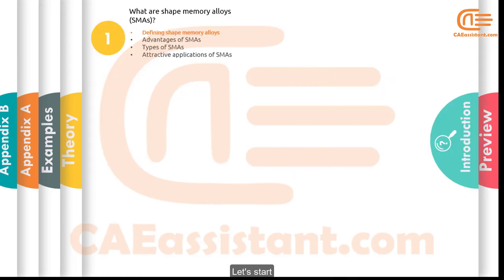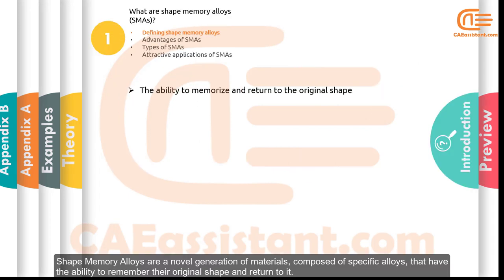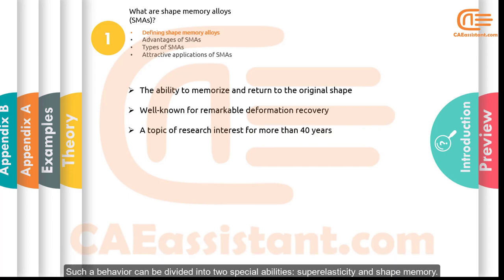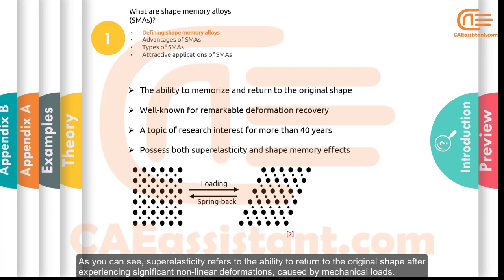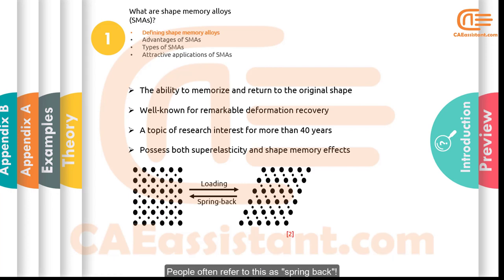Shape memory alloys are a novel generation of materials composed of specific alloys that have the ability to remember their original shape and return to it. This behavior can be divided into two special abilities: superelasticity and shape memory. Superelasticity refers to the ability to return to the original shape after experiencing significant nonlinear deformations caused by mechanical loads — people often refer to this as spring back.